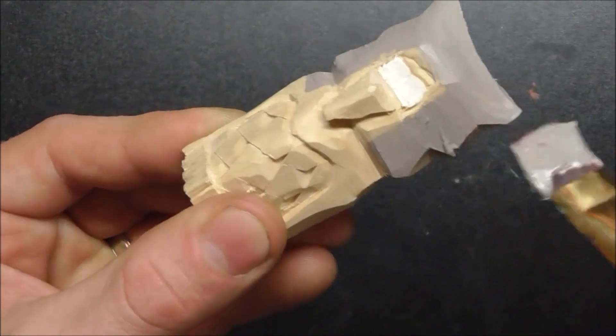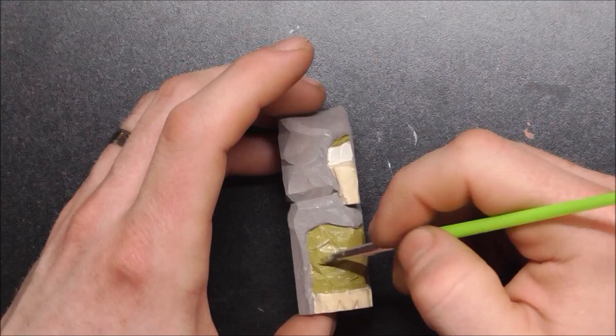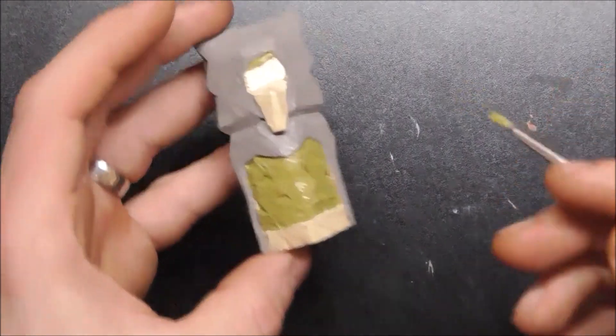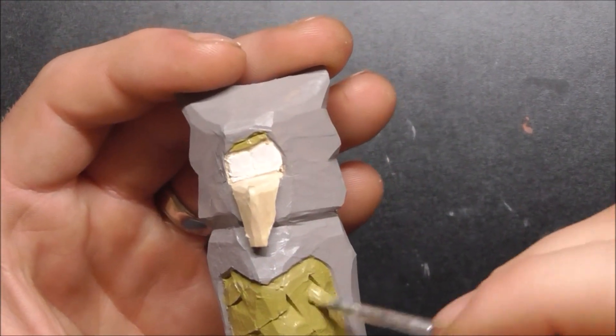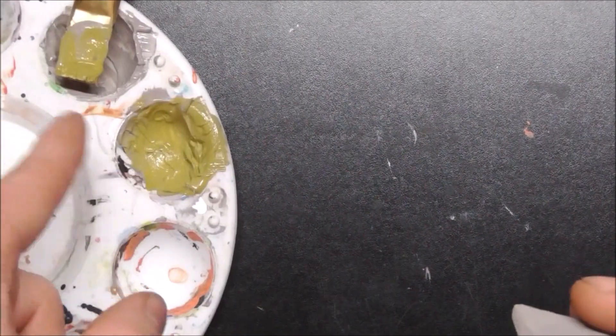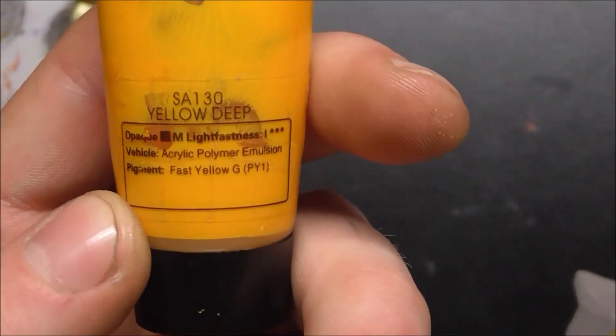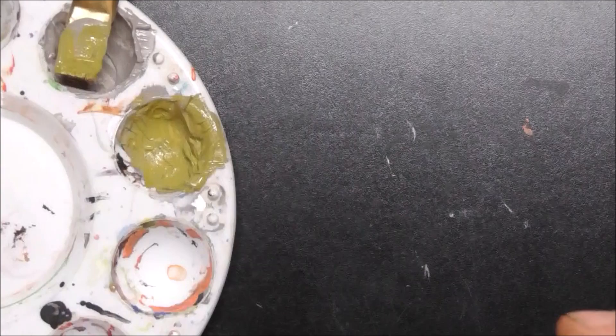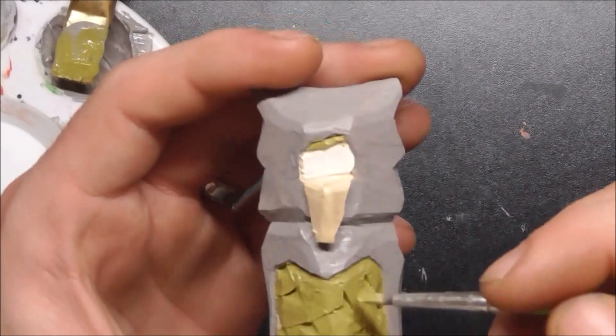All right guys, jumped ahead a little bit. Got the stomach kind of done. I know I mentioned the tannish color, but I just went ahead and tried to utilize that gray, not waste it all. So I just added some yellow deep, just a darker yellow, to the gray just to come up with this puke green.